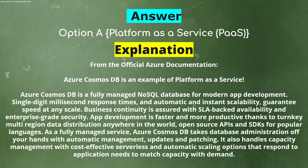Explanation from the official Azure documentation: Azure Cosmos DB is an example of Platform as a Service. Azure Cosmos DB is a fully managed NoSQL database for modern app development. Single-digit millisecond response times and automatic and instant scalability guarantee speed at any scale. Business continuity is assured with SLA-backed availability and enterprise-grade security. App development is faster and more productive thanks to turnkey multi-region data distribution anywhere in the world, open source APIs and SDKs for popular languages. As a fully managed service, Azure Cosmos DB takes database administration off your hands with automatic management, updates, and patching. It also handles capacity management with cost-effective serverless and automatic scaling options that respond to application needs to match capacity with demand.